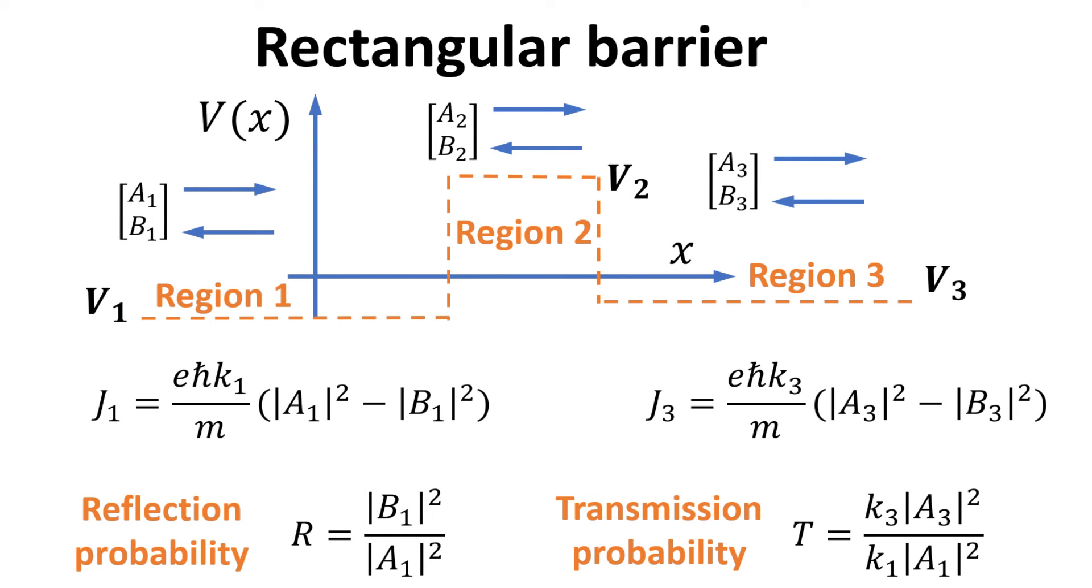Consider an incident wave from the left, characterized by the amplitude A1. We can define a quantity called the reflection probability, which is defined as the ratio of the current reflected off the rectangular barrier to the current incident on the barrier. Similarly, we can define the transmission probability as the ratio of the current that transmits out of the barrier to the current incident on the barrier.